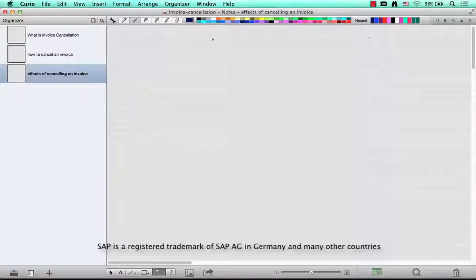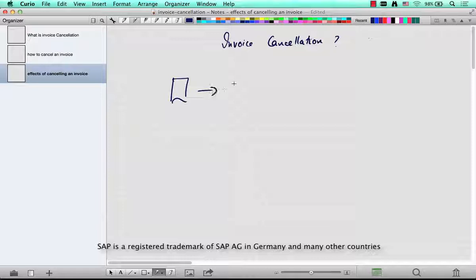So we're going to talk about what is invoice cancellation. So we got a sales order and then a delivery as usual, or without a delivery, and then there is billing or invoicing.